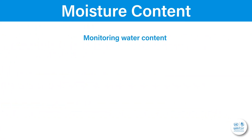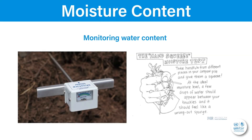Mixing in additional bulking agents such as dry wood chips, cardboard pieces, or newspaper strips is likely to alleviate the problem. There are different ways to monitor and control water content: either using a moisture meter or by hand — when you squeeze a handful, a few drops of water should appear, then the moisture level is ideal.